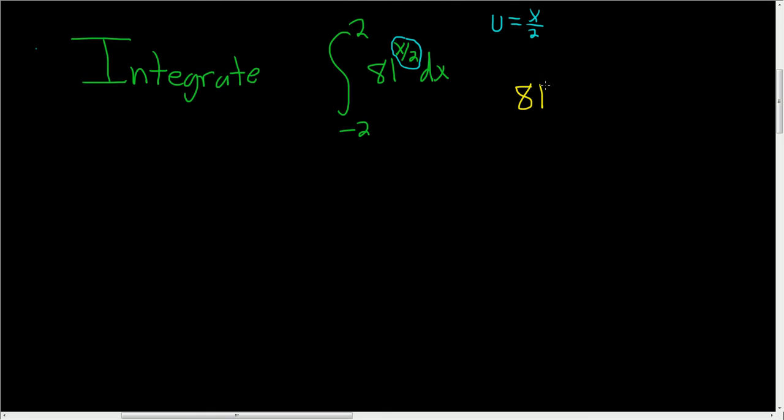So if we have 81 to the x over 2, we can write 81 as 9 squared. So this is 9 squared to the x over 2. And properties of exponents say that you multiply. So this is 9 to the 2 times x over 2. The 2's cancel, so you simply get 9 to the x. So we can go ahead and rewrite our original problem as follows.